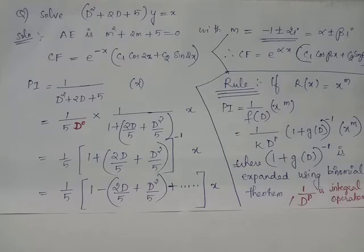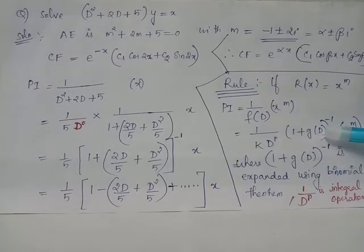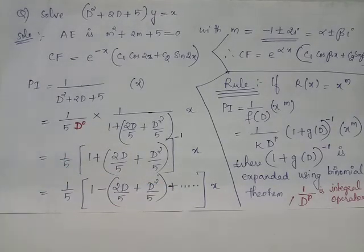For example, if you had taken D² outside in place of D raised to p, after you have evaluated (1 + g(D)) the whole inverse acting on x raised to m using binomial expansion as done in this problem, then that answer will become the input to 1 by D raised to p.